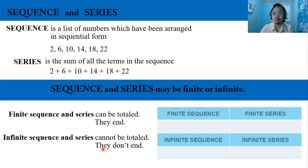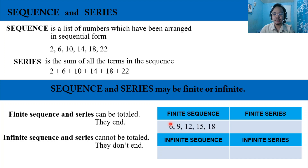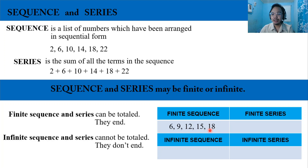Let's take a look at this table. We have finite sequence and finite series. For finite sequence, let's have this example: 6, 9, 12, 15, 18. It's finite because it has an end — it ends at 18, which is the fifth term of the sequence. In finite series form, it becomes 6 plus 9 plus 12 plus 15 plus 18.